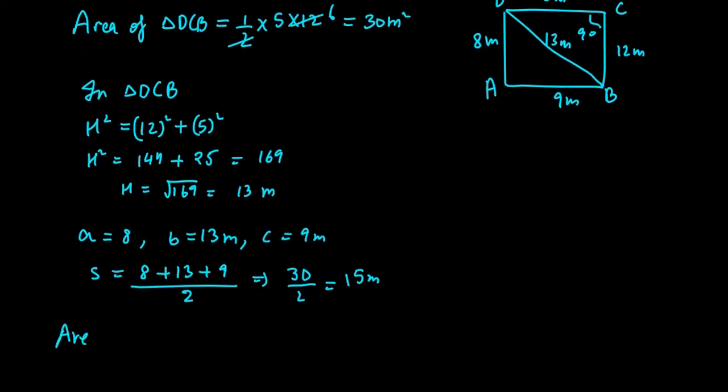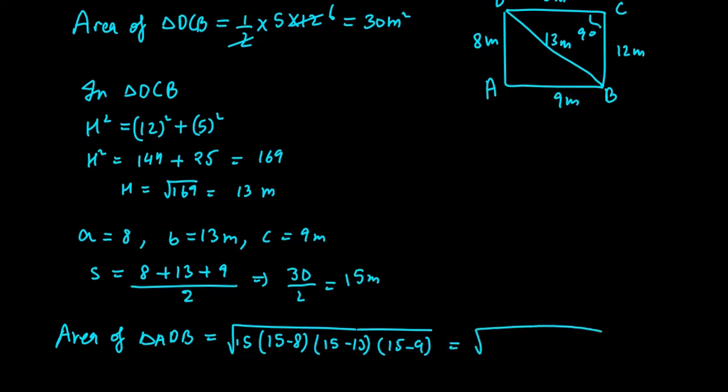The area of triangle ADB will be root of s times (s minus 8) times (s minus 13) times (s minus 9). So root of 15 times 7 times 2 times 6, which is root of 3 times 5 times 7 times 2 times 3 times 2.